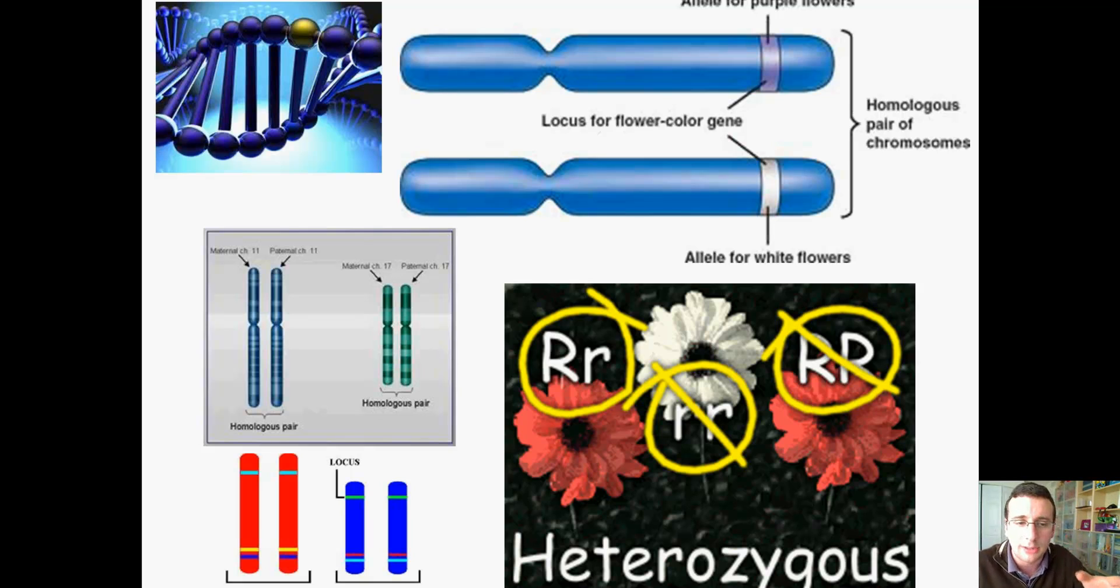We also talked about the difference between a character and a trait, and about the father of modern genetics, which is an Austrian monk called Gregor Mendel. The greatest achievement that Mendel did is debunking the blending theory of genetics, that the idea that we are just a mix of mom and dad.